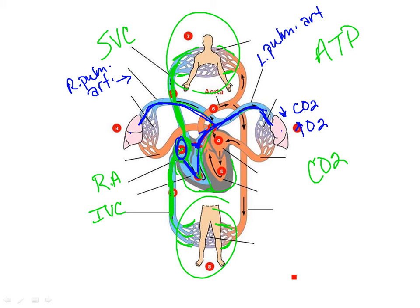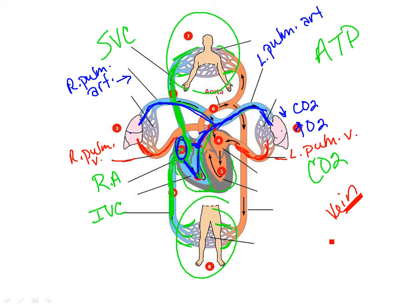Now that blood has become oxygenated. We return that oxygenated blood back from both lungs through the left pulmonary vein and the right pulmonary vein — those are veins because veins bring blood back in, while arteries take blood away from the heart. That oxygenated blood comes back through the left and right pulmonary veins into the upper chamber on the left side of the heart. The left side of the heart is now responsible for taking blood out to the body because it's full of that oxygen, bound to hemoglobin molecules.